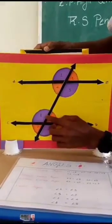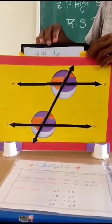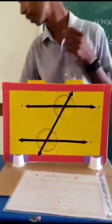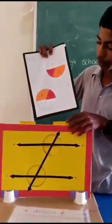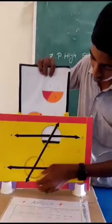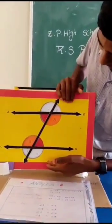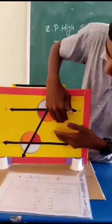Now I am fixing another card in this model. It shows alternative interior angles. This is the exterior part and this is the interior part.